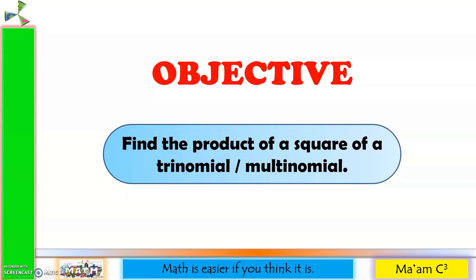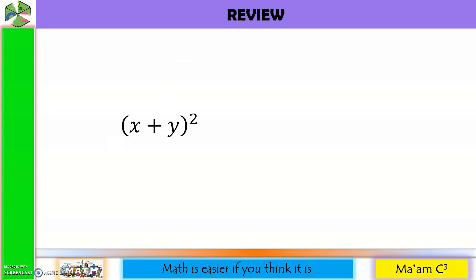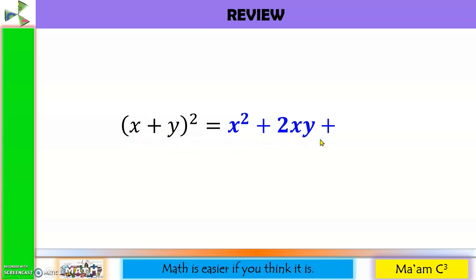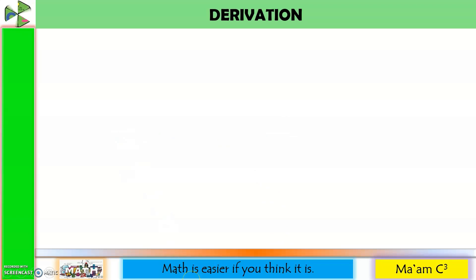Our objective in this lesson is to find the product of a square of a trinomial or multinomial. Let's have a quick review on how to square a binomial. First we're going to square the first term, so this is x squared. We copy the sign, and then twice the product of the first and the second term. The third term is always positive, and the square of the second term.